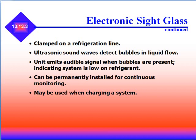Electronic sight glasses are clamped onto the refrigeration line and use ultrasonic waves to detect bubbles in the liquid flow. The unit emits an audible signal when bubbles are present, indicating the system is low on refrigerant. It can be permanently installed for continuous monitoring or used when charging a system.